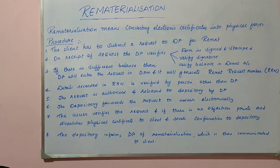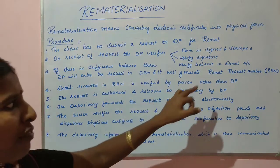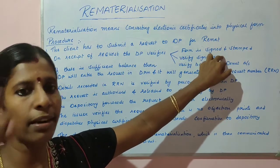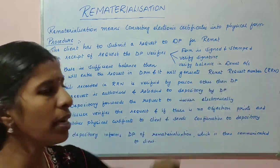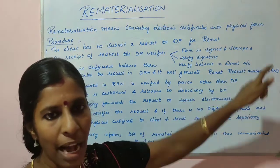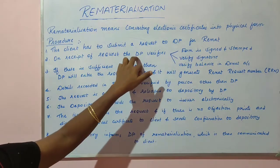Once you give a request to the depository participant, the depository participant verifies your request. It verifies whether your request form is fully filled, signed, and stamped, and it verifies your signature against the specimen signature given earlier. It also verifies your balance in the DMAT account, because only if you have sufficient balance can you rematerialize. These are the three verifications done by the depository participant.